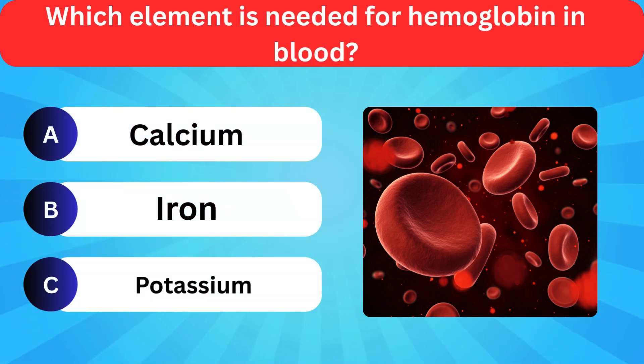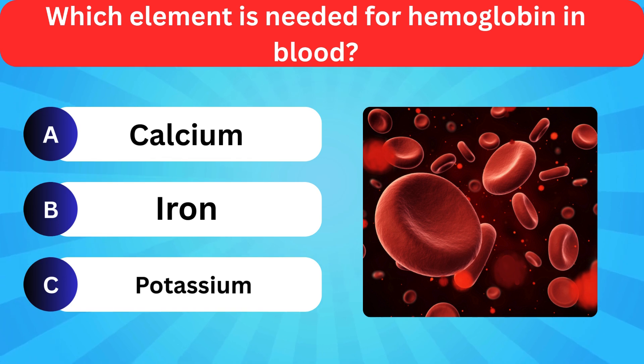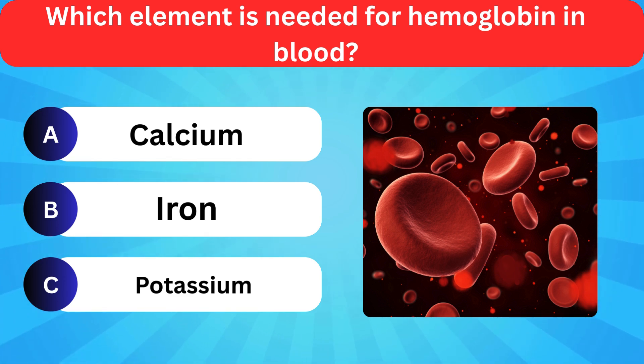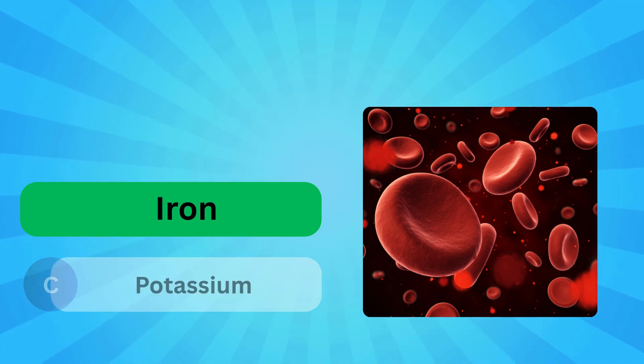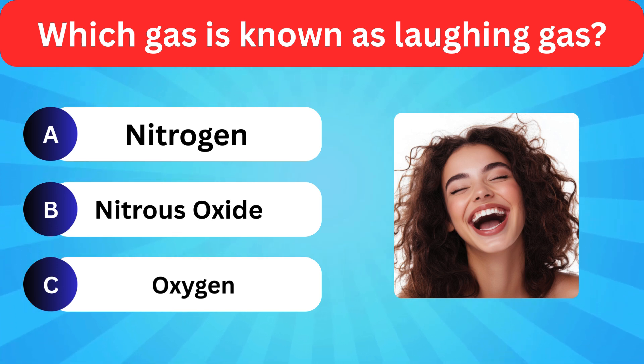Which element is needed for hemoglobin in blood? Options: Calcium, Iron, Potassium. Correct answer is iron.